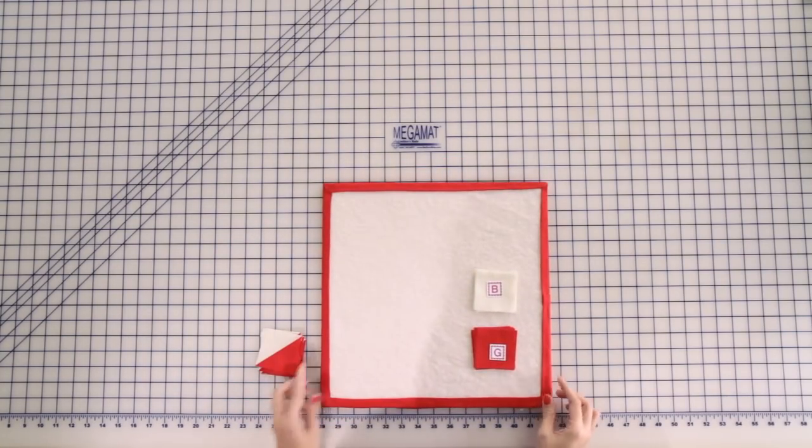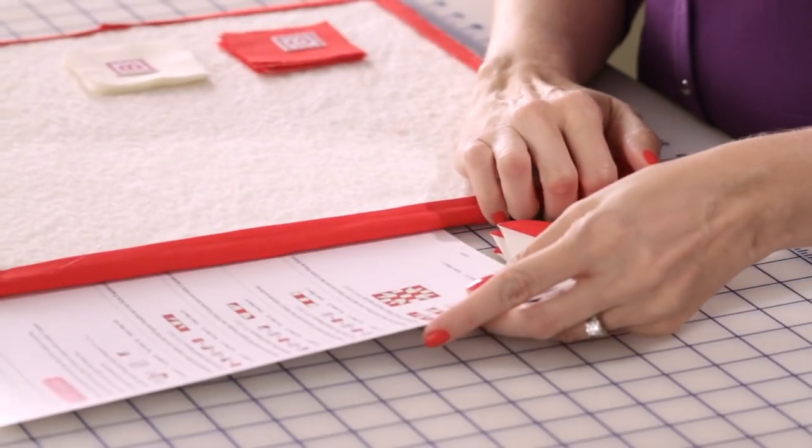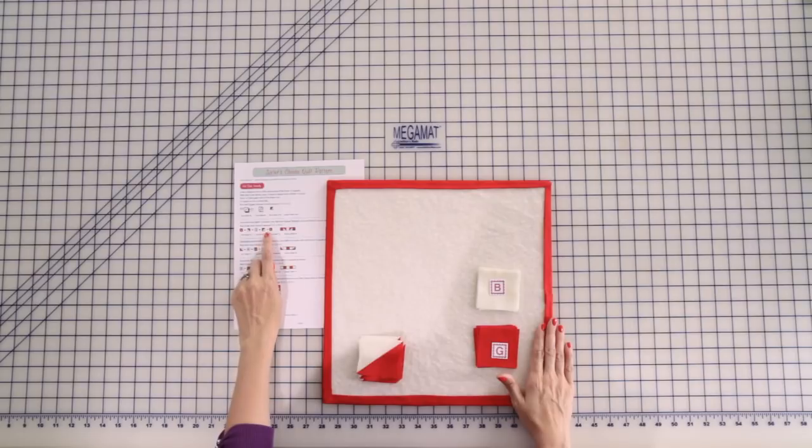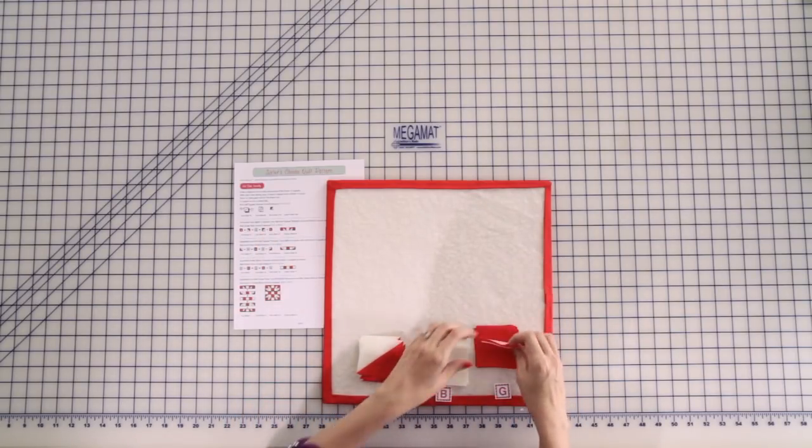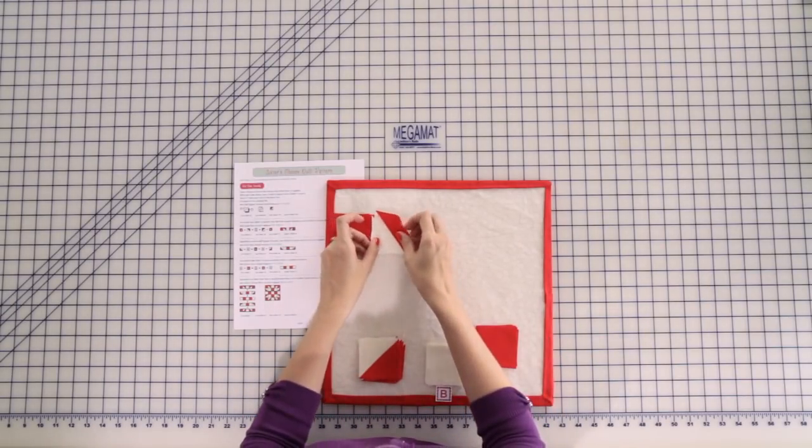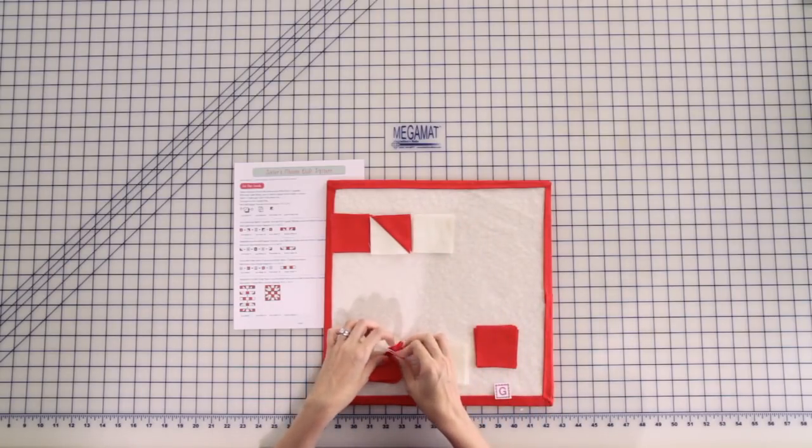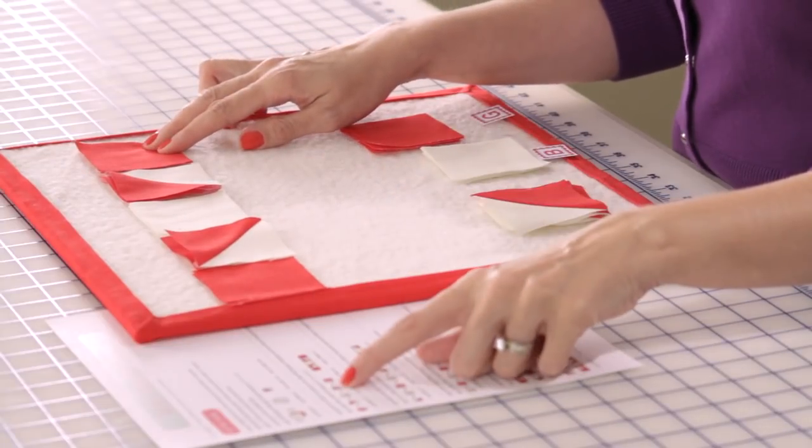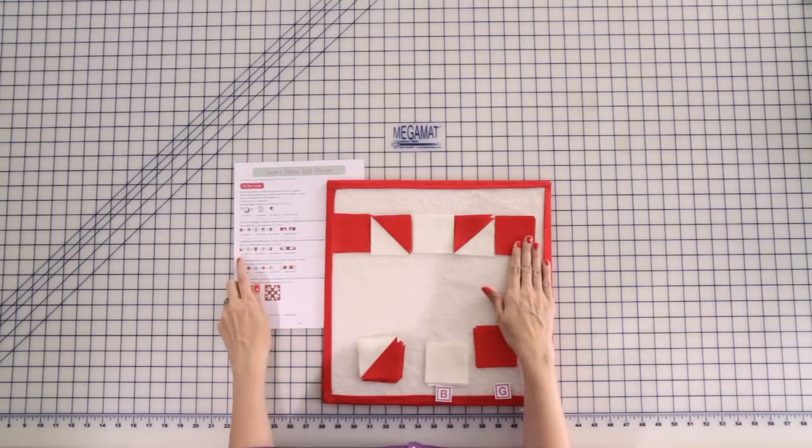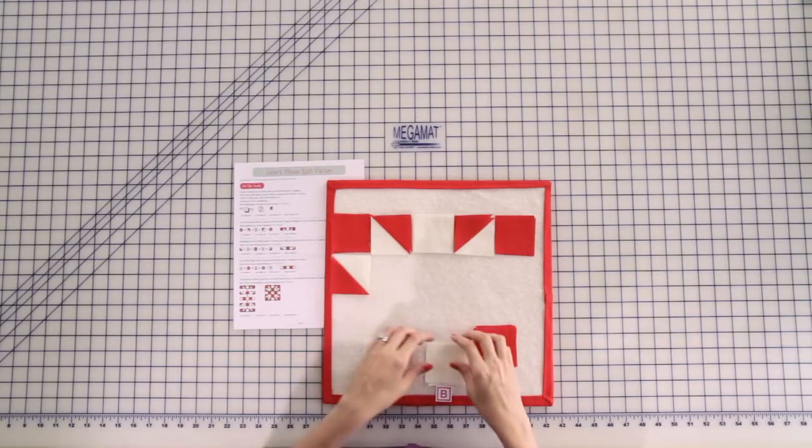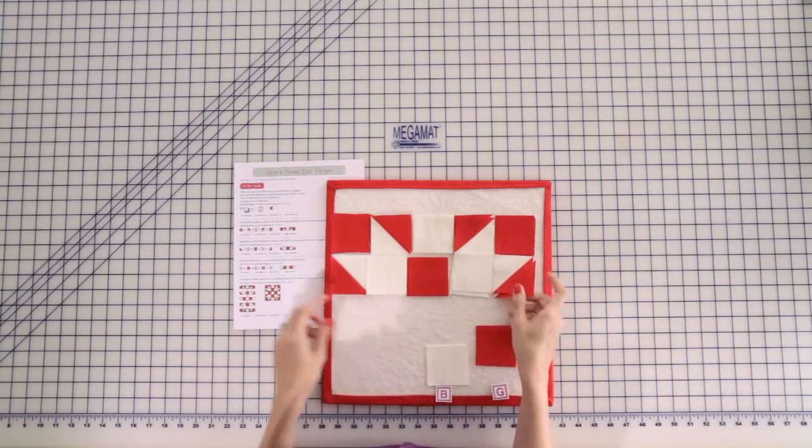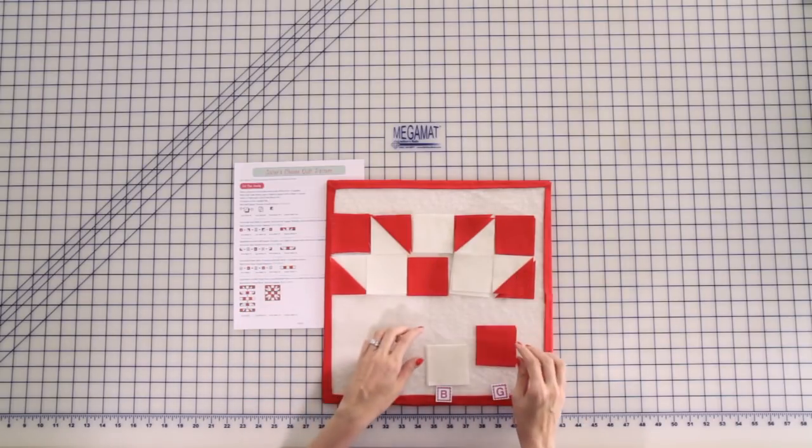Now that our half square triangles are complete, we can set out our rows. I'm going to use our design board for this step and our pattern. What I'm going to do is just lay out everything on my design board following my pattern. You can see on the red outer row, it's laid out exactly like this and we need to make two. The reason we're using our design board is so we can take this straight to our sewing machine and nothing will move. Double check to make sure your half square triangles are the right direction. We've got two outer rows. Let's move to our two inner rows. So now we've got our two inner rows, and lastly, we have our center row, which is the easiest.